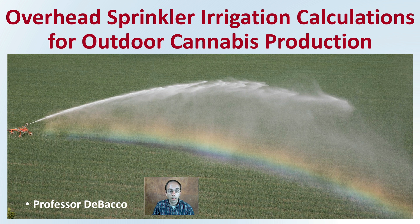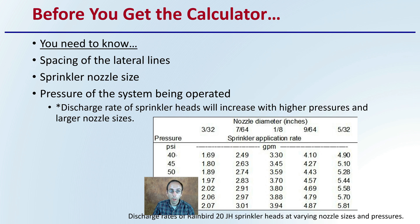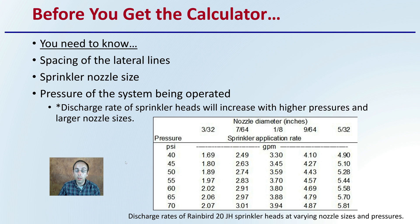Here we see a nice image of some overhead irrigation — a nice mist in the sun creating a rainbow effect. Before you get to the calculator, keep in mind that you need to know a couple of things: the spacing of your lateral lines, the sprinkler nozzle size, and the pressure of the system being operated. All these factor into these calculations.